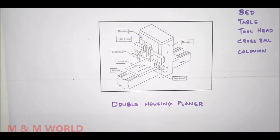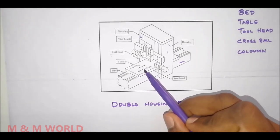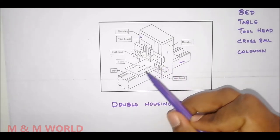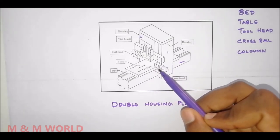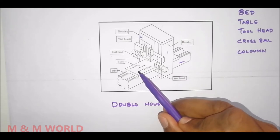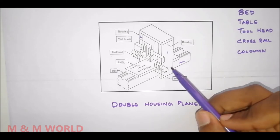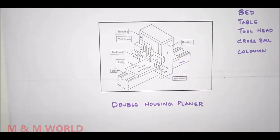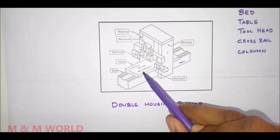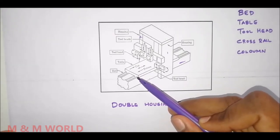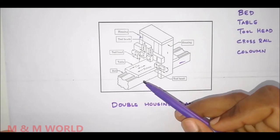Now the second one is the table. The table supports the work and it reciprocates along the guideways on the bed. The planer table is very heavy and is a rectangular casting, usually made up of cast iron.